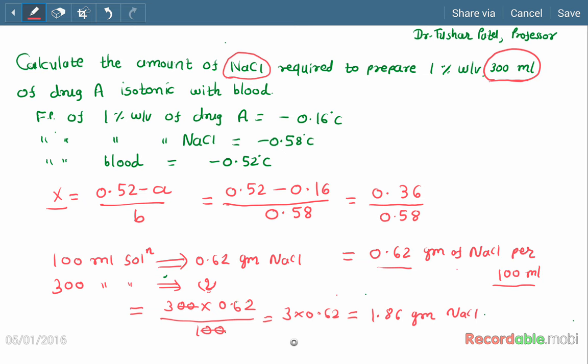Sodium chloride for 300 ml, so this is our final answer. 1.86 grams of sodium chloride is required to prepare an isotonic solution of the given drug.